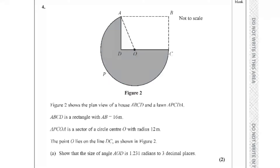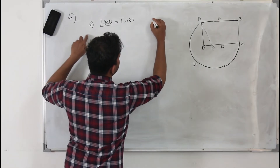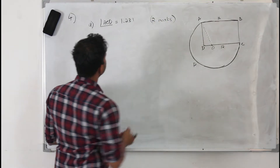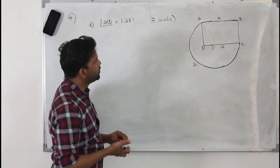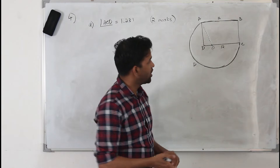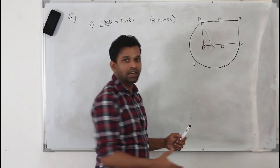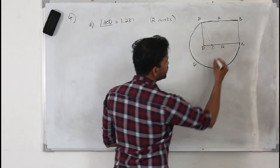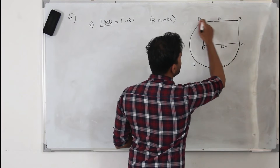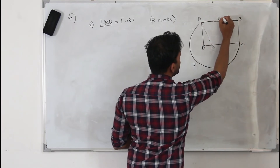Part A says: show that the angle AOD is 1.231 radians to three decimal places. This part has only two marks — all you need to do is prove it. This is a circle with the center at O, and we are given the radius of the circle is 12 meters. The length of this triangle side is 16 meters.